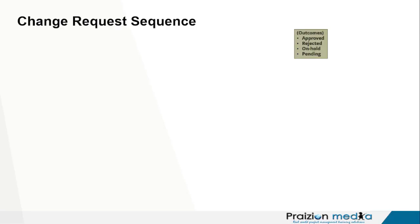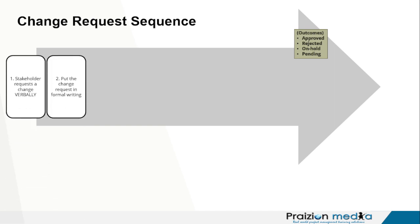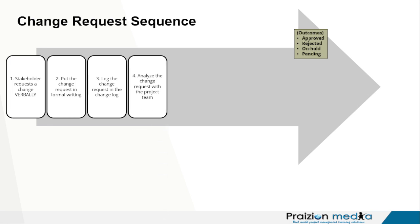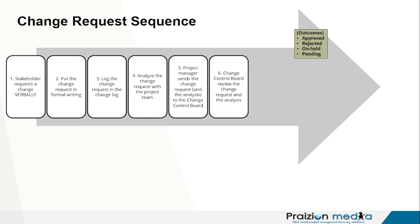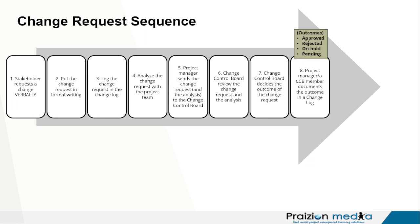Let me show you the flow for change request because it could help you on your exam. You may get a verbal request — put it in formal writing, log it into the change log, then analyze the impact from every perspective: how does this change impact schedule, cost, scope, resources, communications, risk, procurement, stakeholder? You want to look at everything. Then you send the change request and your impact analysis to the change control board. If there is one, they review the request and decide the outcome of the change, logging it in the change log and sharing it with stakeholders.